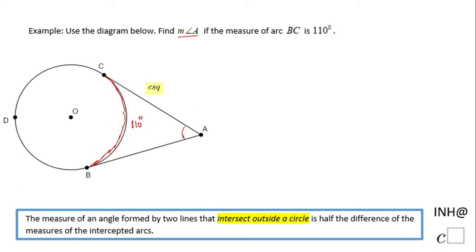The measure of angle A will be half of the difference between the measures of the intercepted arcs.